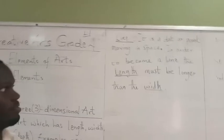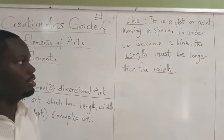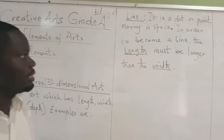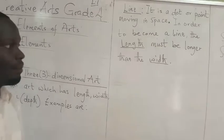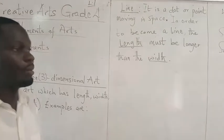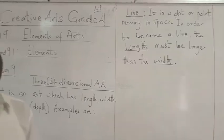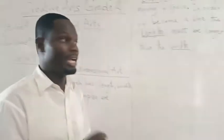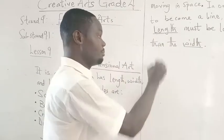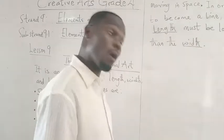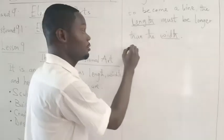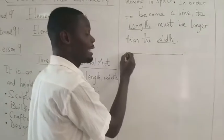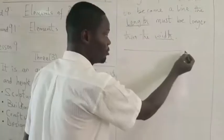A line is a dot or point moving in space. Moving in space in order to become a line. The length must be longer than the width. Remember that — the length must be longer than the width. Now when we are talking about line, we are saying that if I want to draw a line, I will put a dot first. If you are holding your pencil or your pen, what you do is you will go like this first.